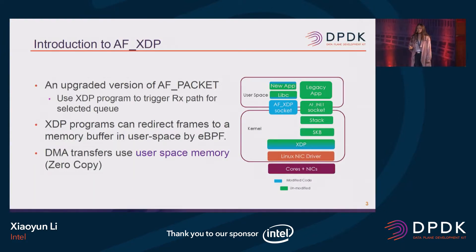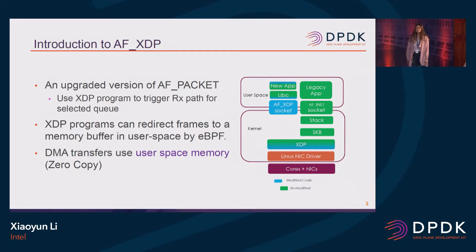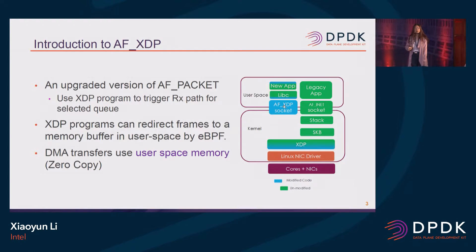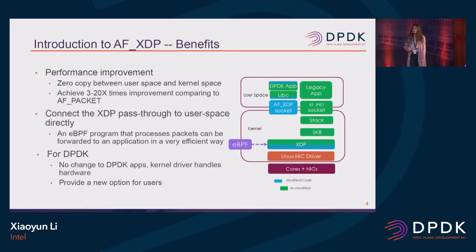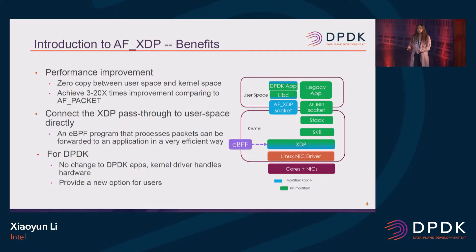Let's look at the concept of AF_XDP first. It can be regarded as an upgraded version of AF_Packet. It uses the XDP program to trigger the XDP path for selected queues and redirect the frames to user space memory, so it can achieve zero copy between user space and kernel space. The most important benefit of AF_XDP is the performance improvement compared to AF_Packet — about 3 to more than 20 times improvement.